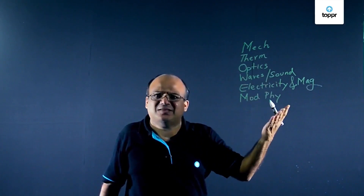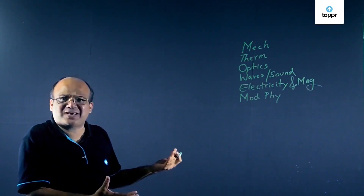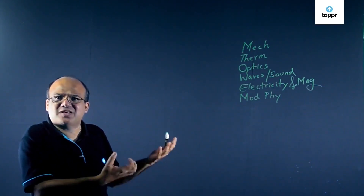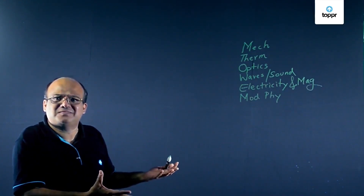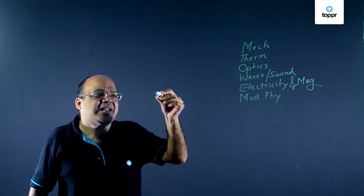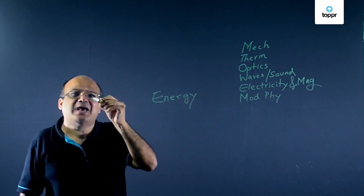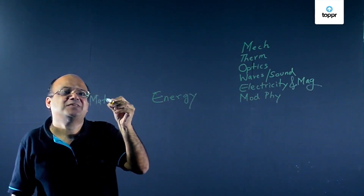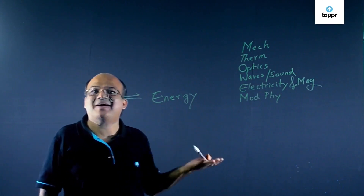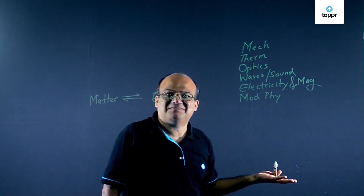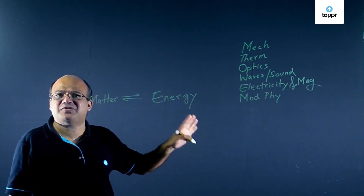So what is common to all this — mechanics, thermodynamics, optics, waves, sound, electricity, magnetism, modern physics? Energy. And along with energy, we have got matter. And that is all that we study in physics — matter and energy and the interaction between matter and energy. Physics is simple. If you're finding physics difficult, that means you're not learning physics properly.